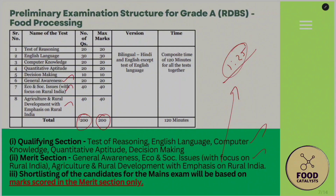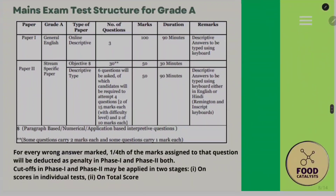Shortlisting for the mains exam is based on the merit section only, though you must also pass the qualifying sections with minimum scores. For the mains examination, there is Paper 1 on General English and Paper 2 on your specific stream — in this case, food processing. The mains has 30 objective questions and 6 descriptive questions, totaling 200 marks.